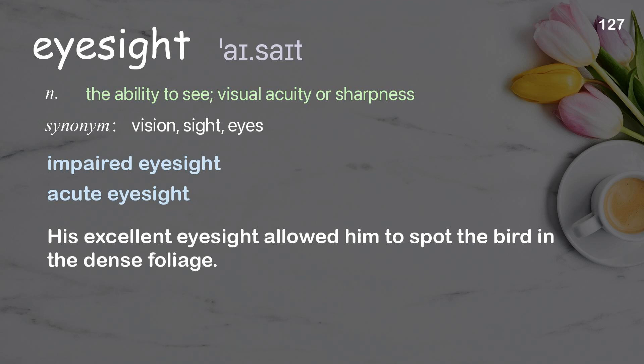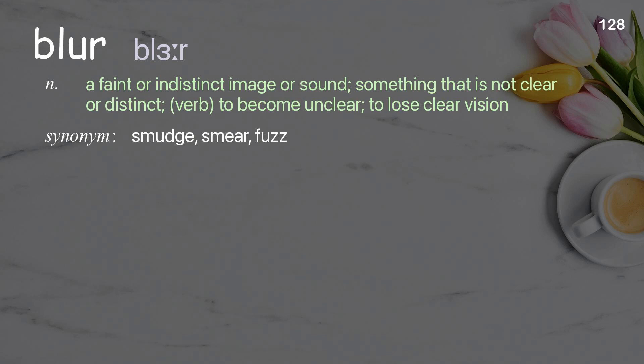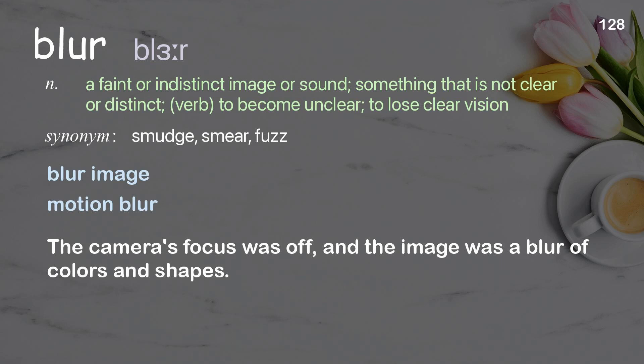Blur: a faint or indistinct image or sound; something that is not clear or distinct. Verb: to become unclear, to lose clear vision. Examples: blur image, motion blur. The camera's focus was off and the image was a blur of colors and shapes.